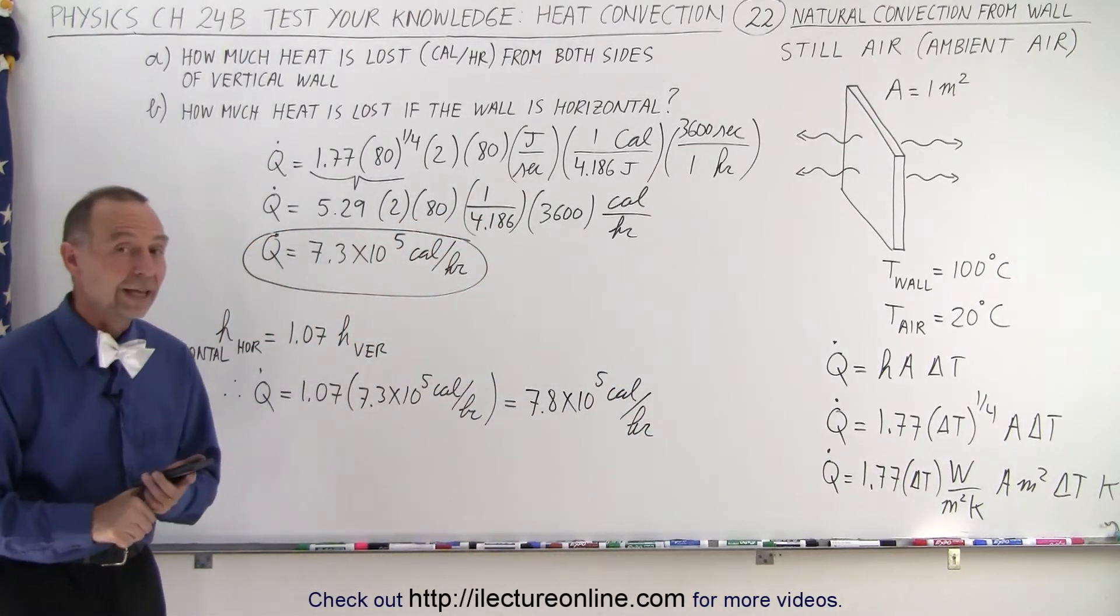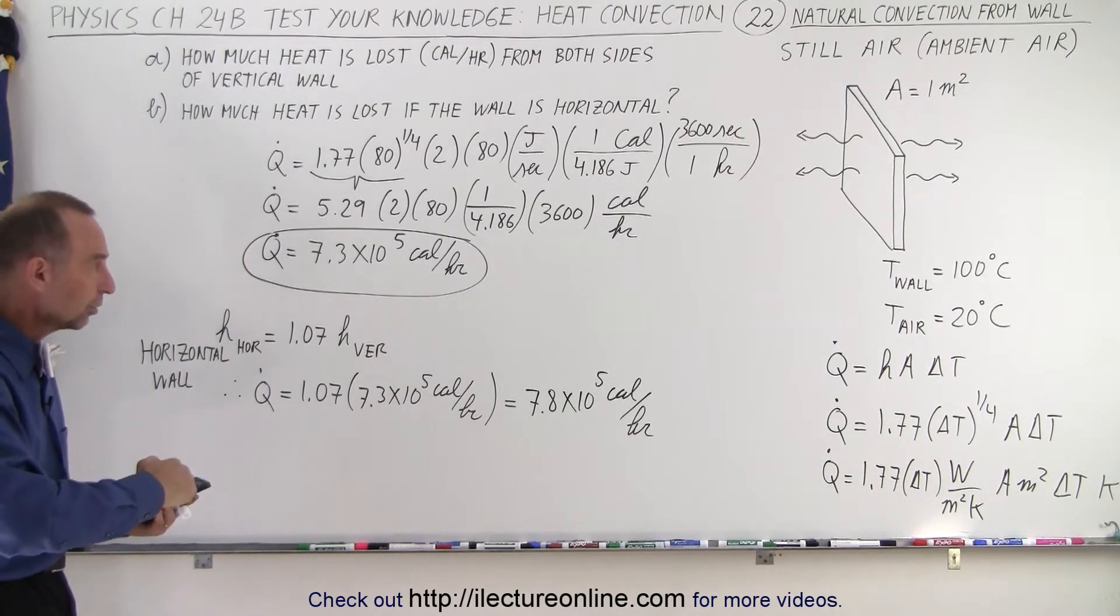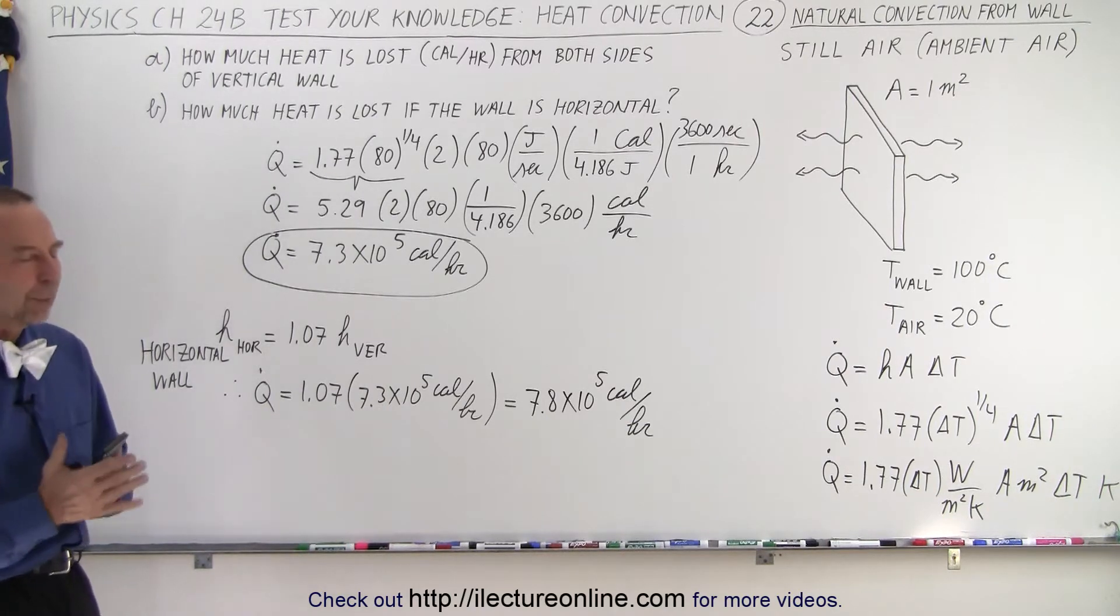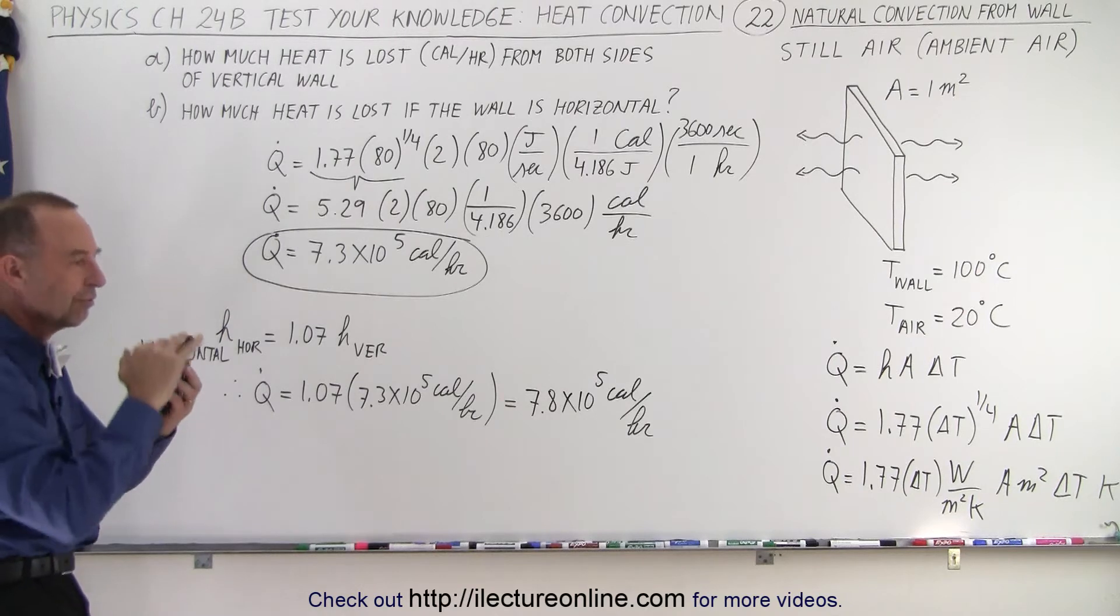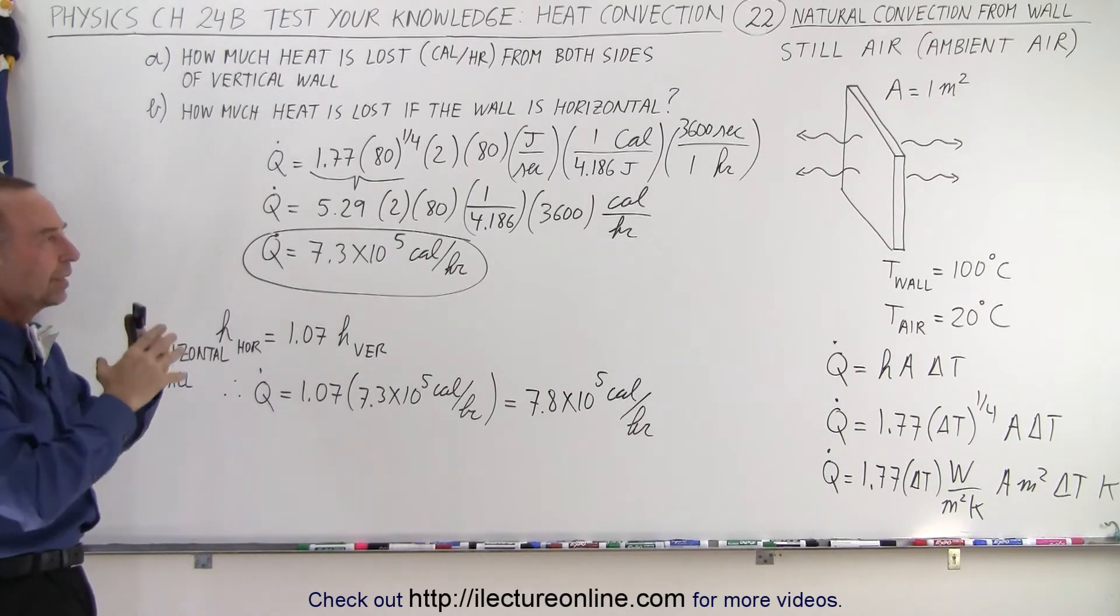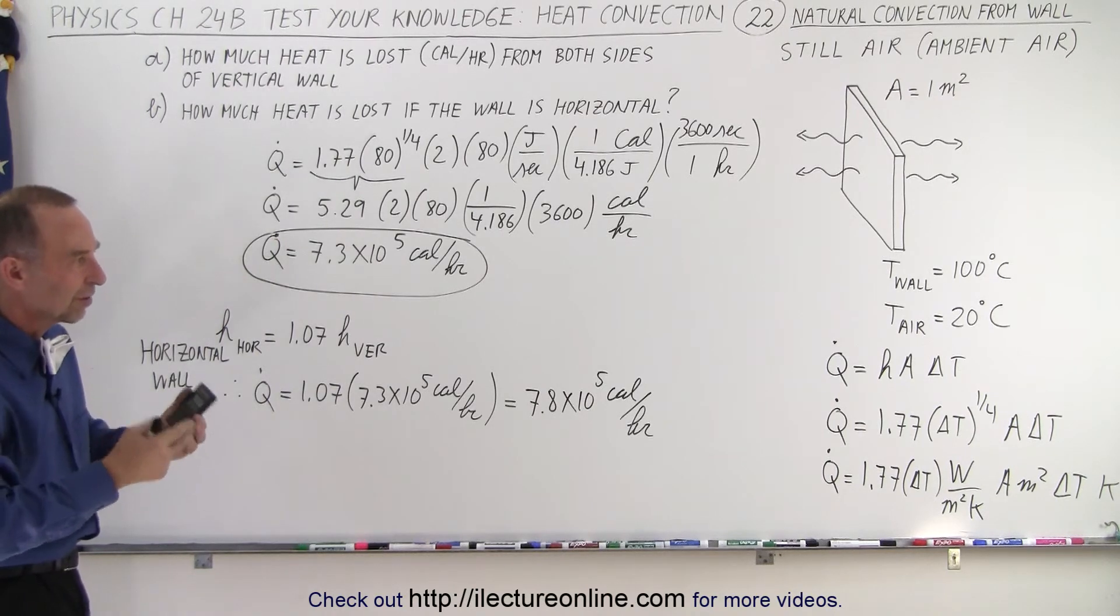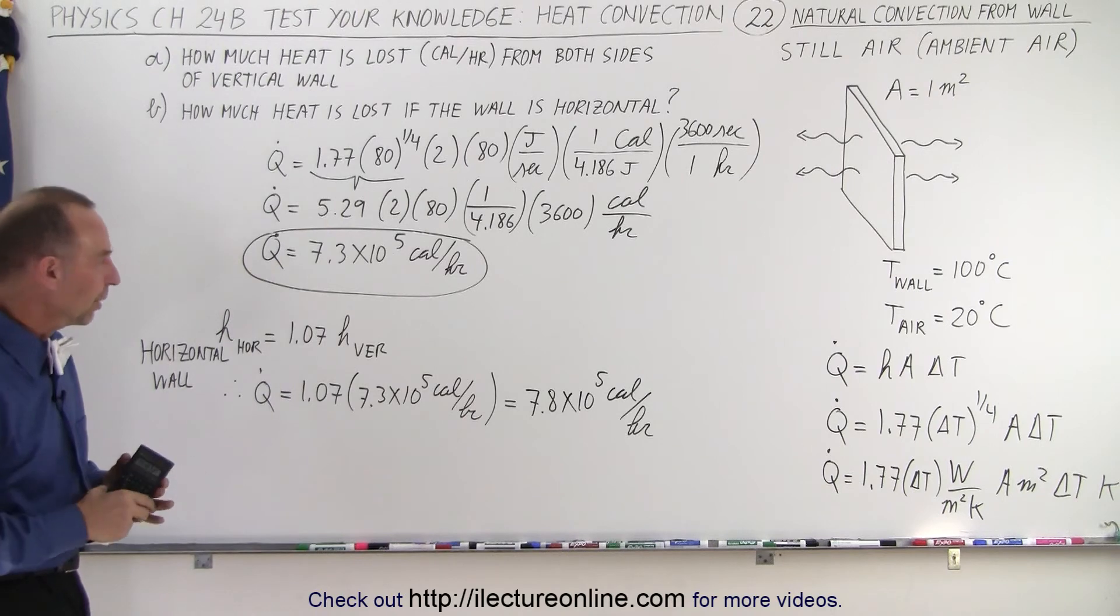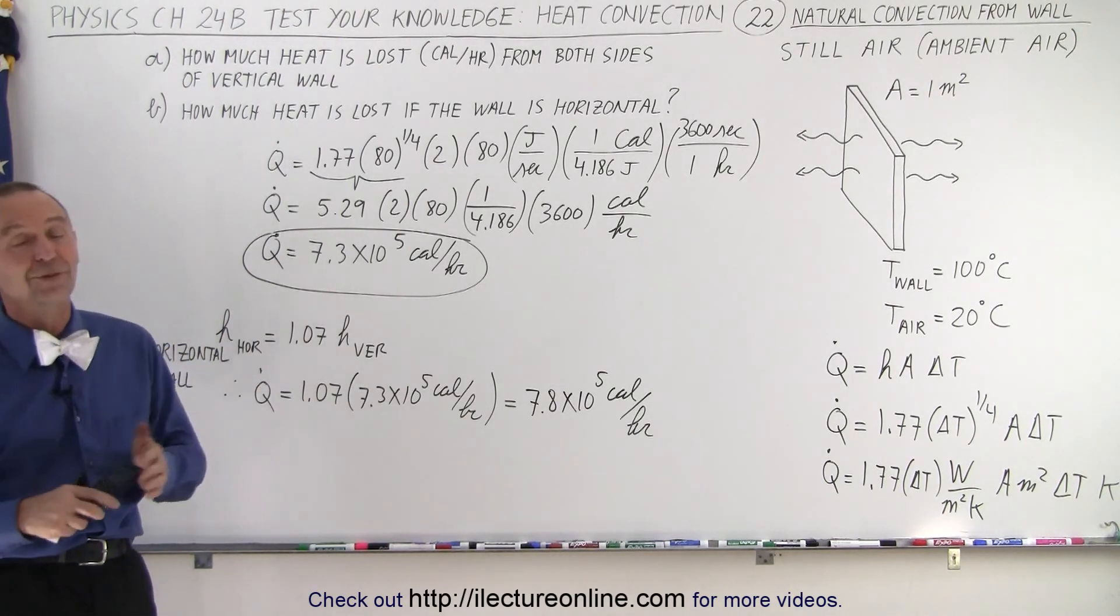So about a 7% increase in the heat being released from the wall if the wall is horizontal versus the wall being vertical. And just that part of that is because when the wall is horizontal, you have much more of a drift of the energy going up with the air that gets heated, and then of course goes up because it becomes less dense and rises up. And then you get more of a heat flow through that particular process, which gives it a difference of about 7%. And that is how it's done.